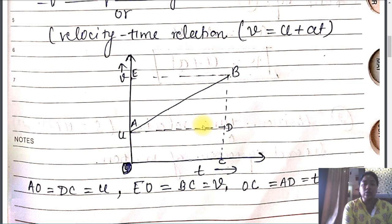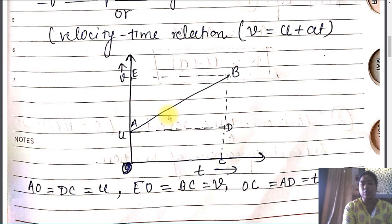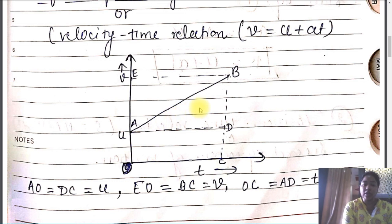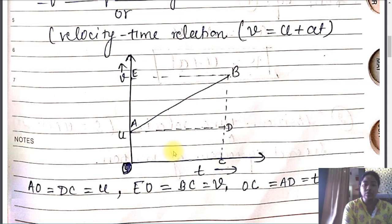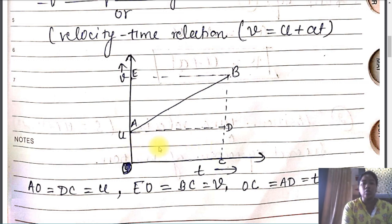Now, how do we calculate the total area under the slope? We split the whole area into two parts. As shown in the graph, one part is a triangle and the other part is a rectangle. We calculate the area of each separately, and when we add both areas, we get the total area under the graph.